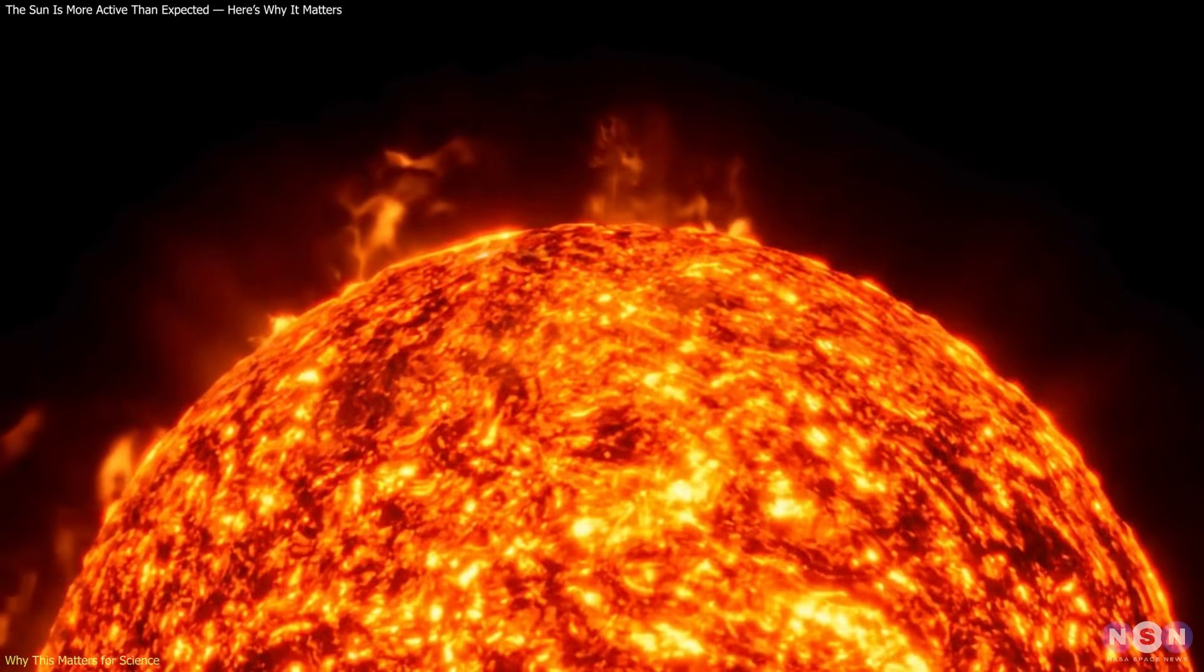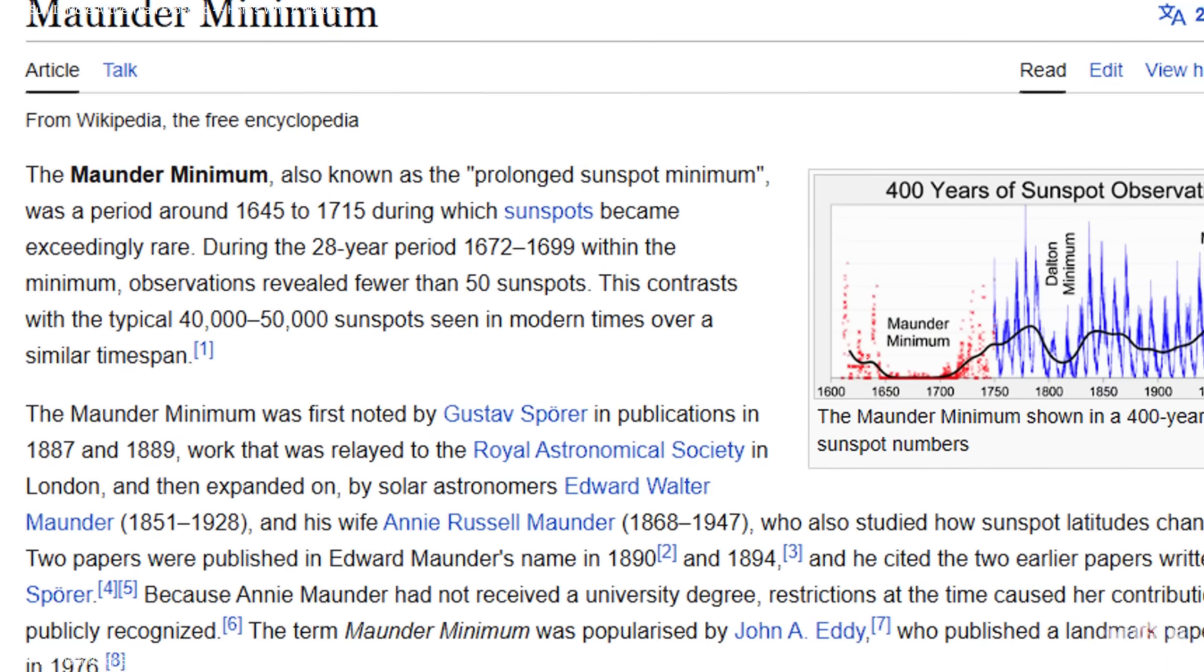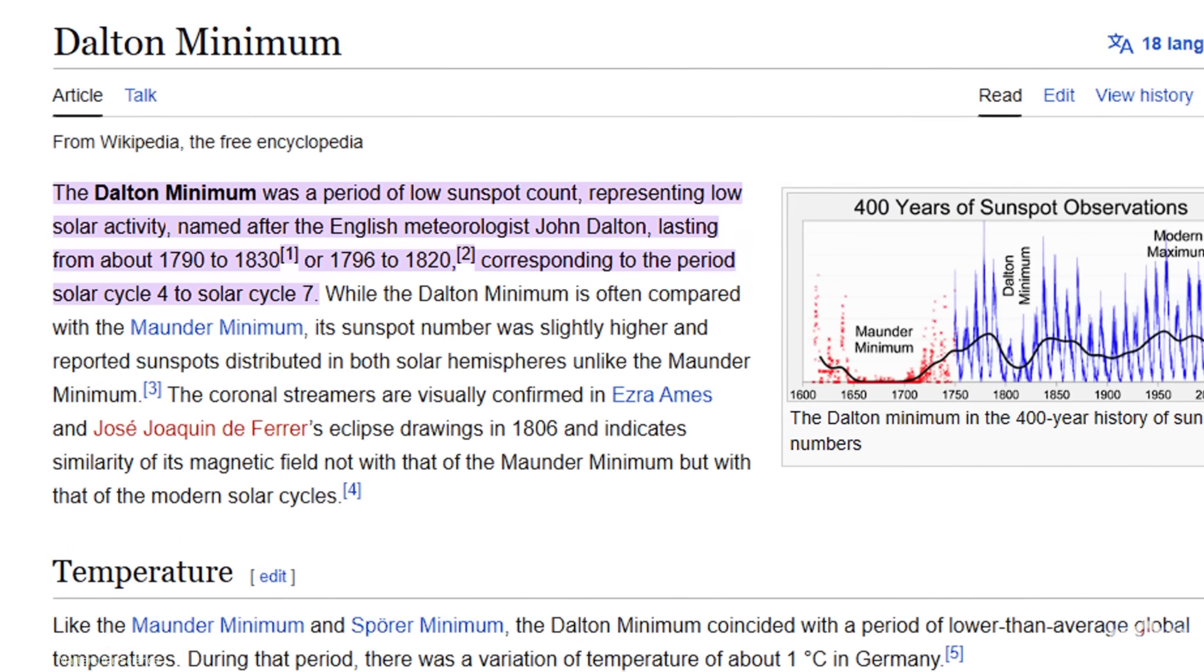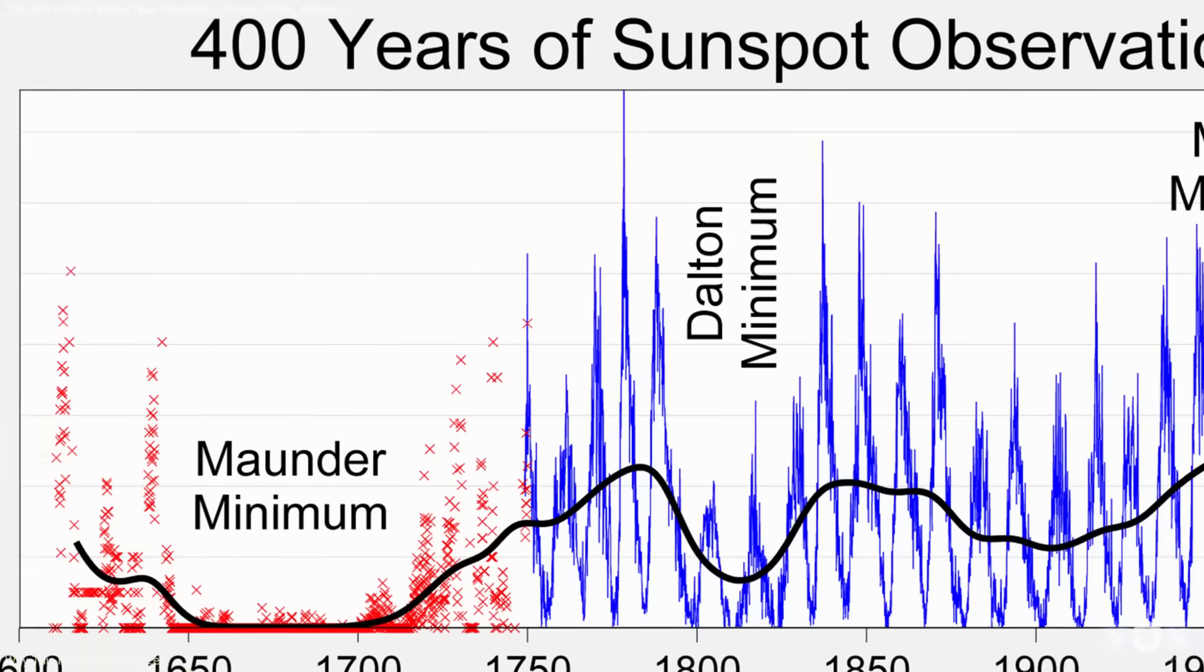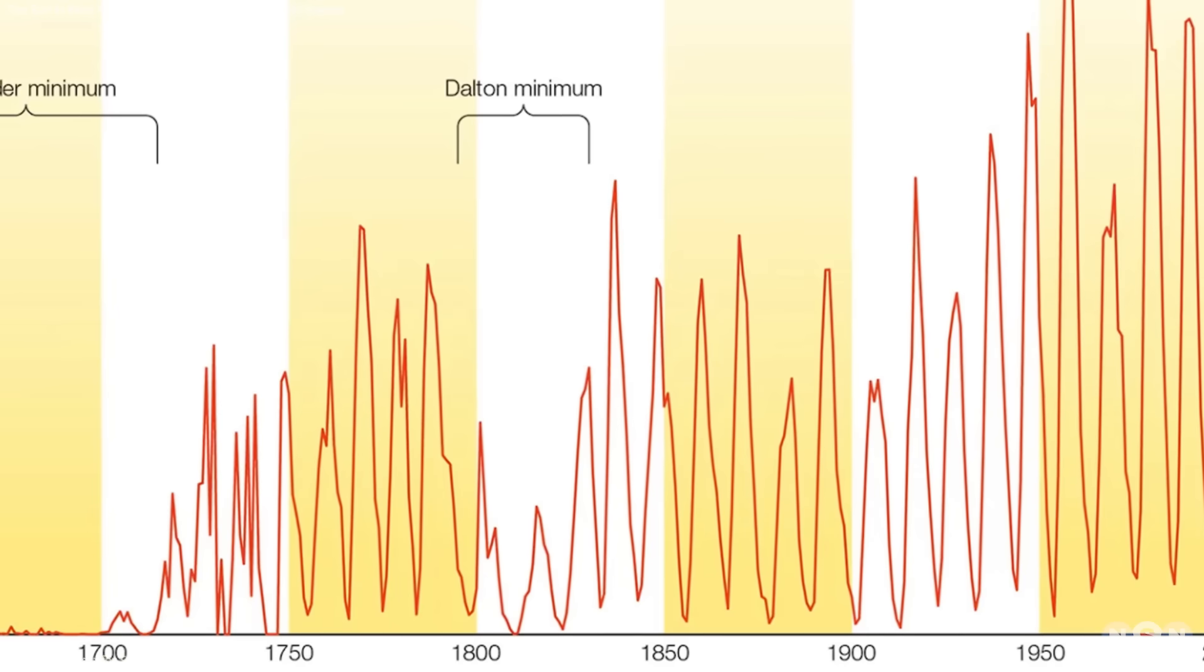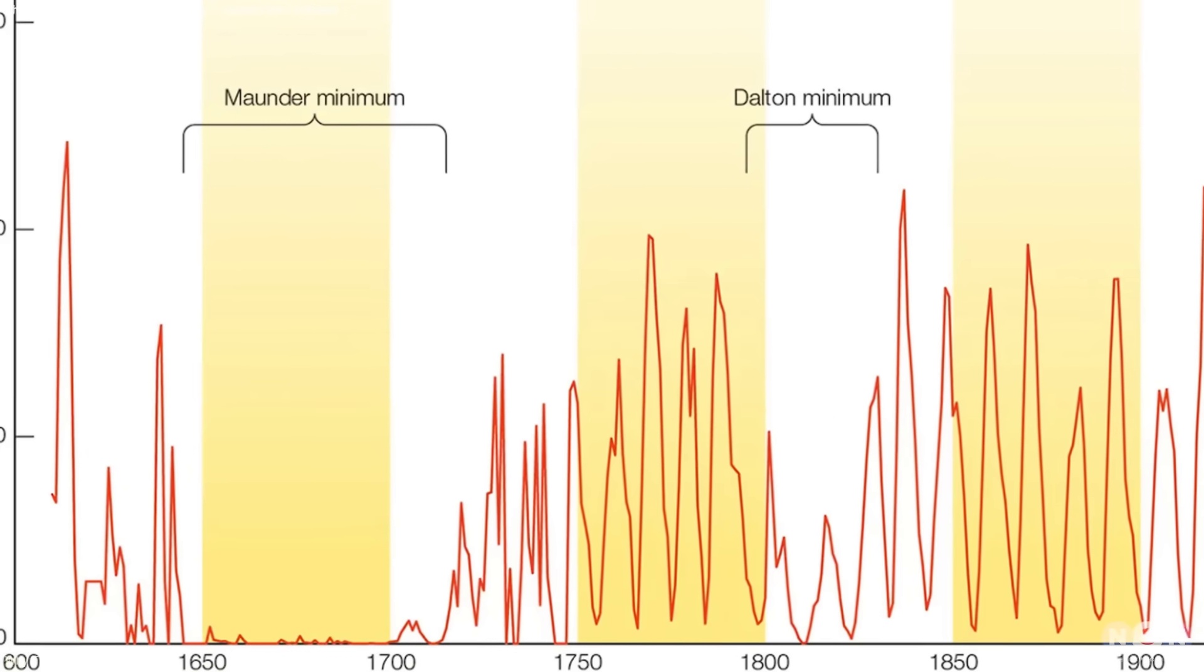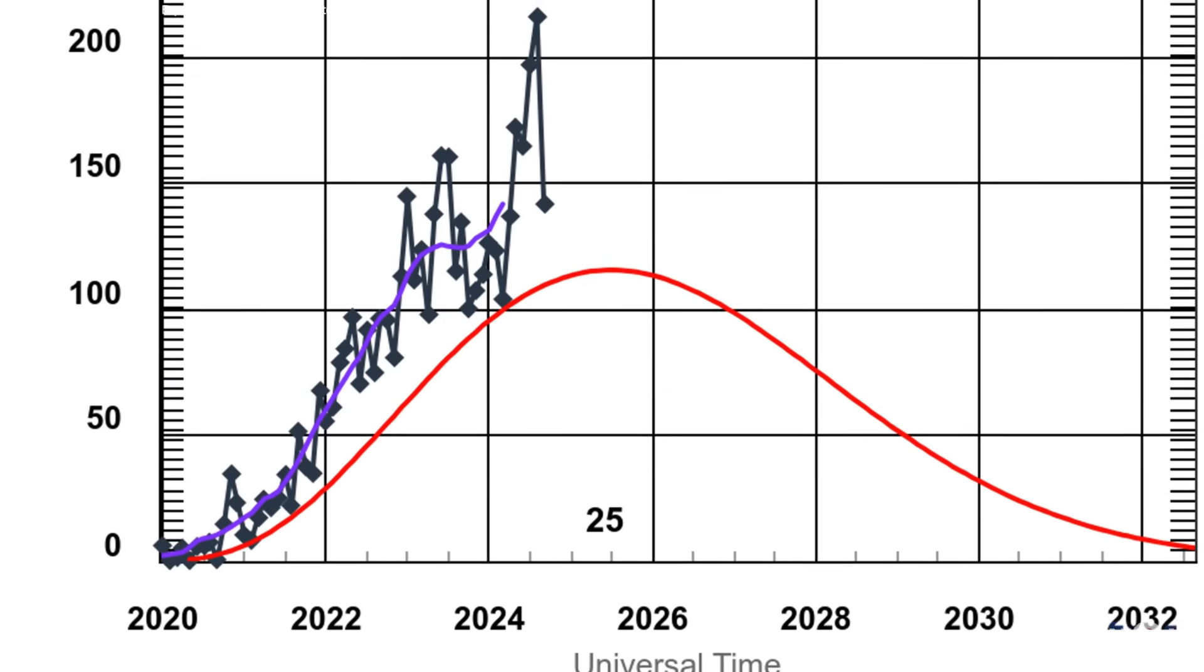Historical records add another layer of uncertainty. The Maunder Minimum and Dalton Minimum both showed how unpredictable it can be across decades. Neither event is fully explained, but both demonstrate that it can depart from its usual cycle for extended periods. The recent reversal may represent another such shift, though in the opposite direction.